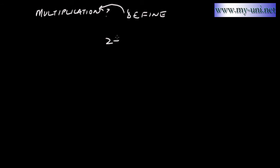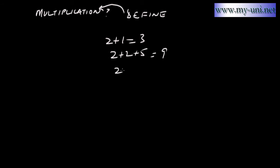Before we start, we have to understand addition. For example, 2 plus 1 is equal to 3, 2 plus 2 plus 5 is equal to 9, and 2 plus 3 plus 1 is equal to 6. These are simple additions — numbers being added together.